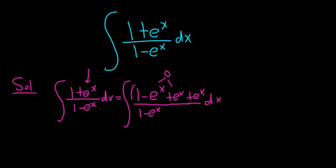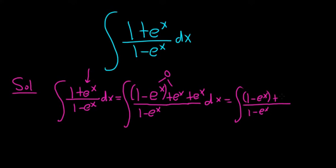Now I'm going to use parentheses to group these. This is equal to (1 − eˣ) / (1 − eˣ), and then in parentheses plus 2eˣ, dx.